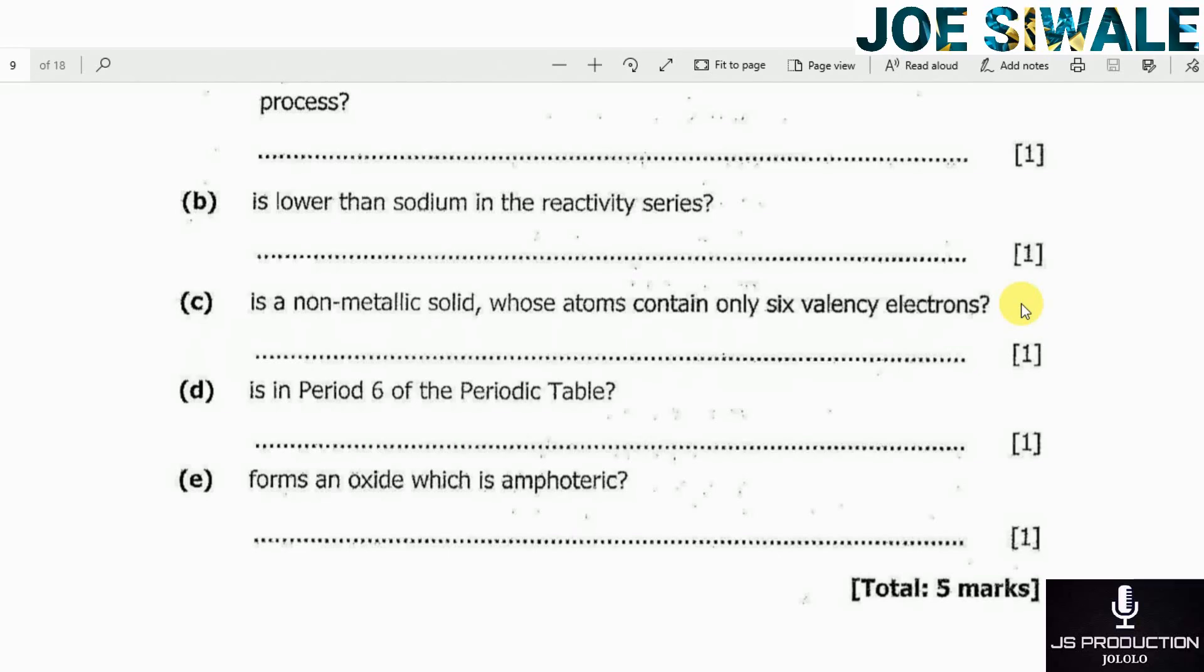Then question E reads: forms an oxide which is amphoteric. Amphoteric oxides are oxides which behave as a base when they react with an acid, or they behave as an acid when they react with a base. And considering these elements that have been given, none of them act as amphoteric oxides. So my answer on question E is none.